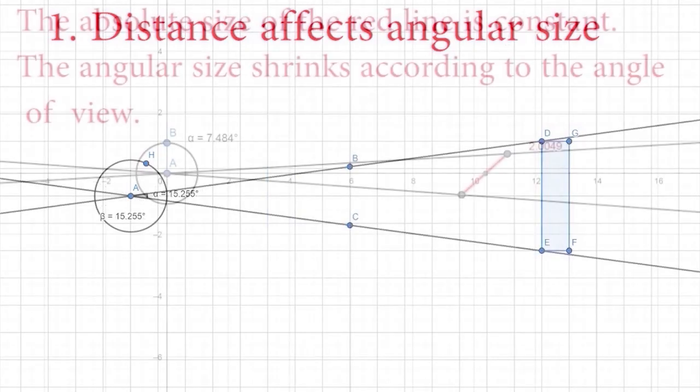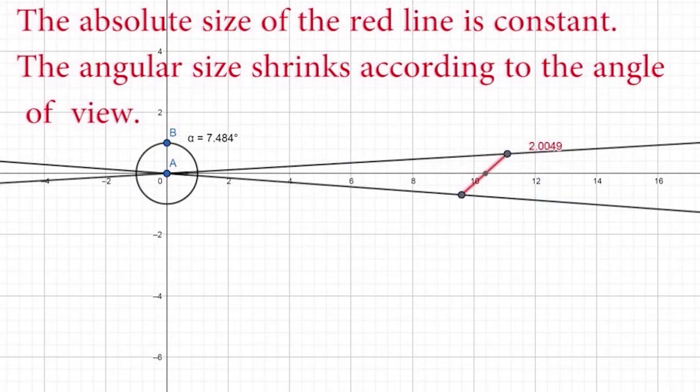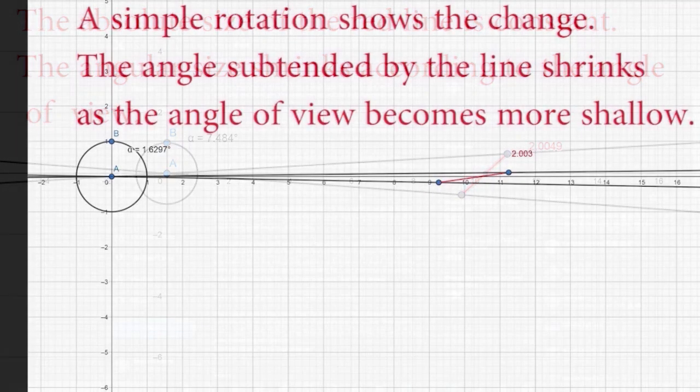At a certain distance, an object's light spreads out so much that there's not enough of it that can fit through your eye for you to detect it at all. This distance depends on how big the object is and how big your pupil is.